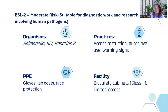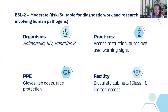For BSL-2, you have moderate risk and it's suitable for diagnostic work and research involving human pathogens — the kind of labs you see in teaching hospitals, general hospitals, and specialist hospitals. Work involves organisms such as Salmonella, HIV, and hepatitis. Safety practices include access restriction — not everybody should have access to the lab — an autoclave for disposing of organisms, warning signs everywhere, and protective equipment like gloves, lab coats, and face protection. You should have at least a class-two biosafety cabinet and limited access.